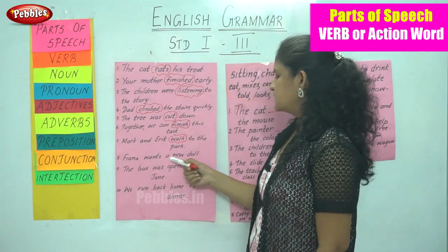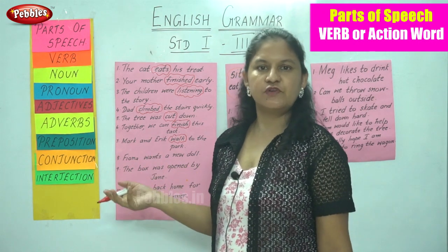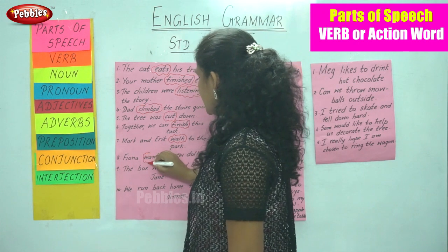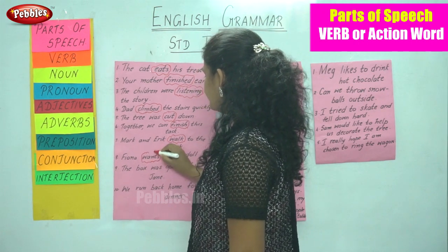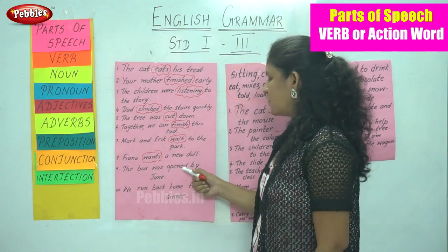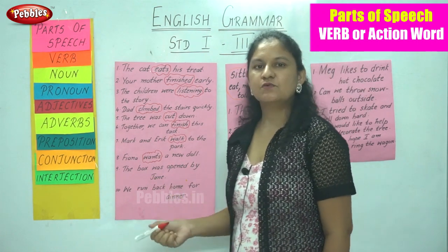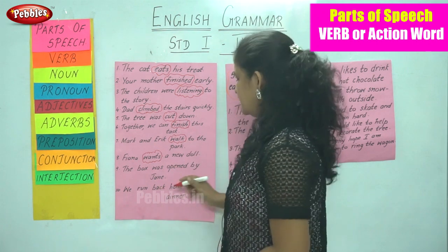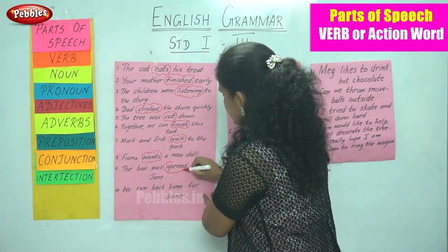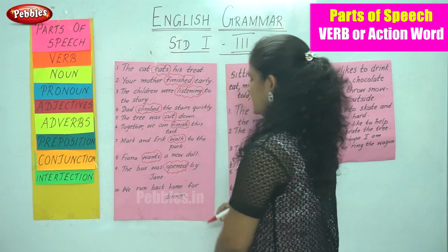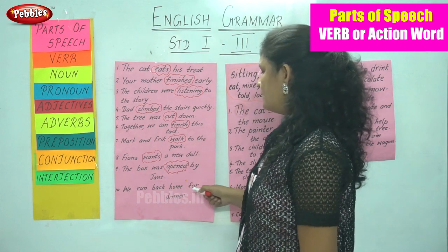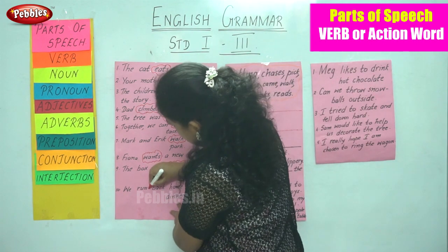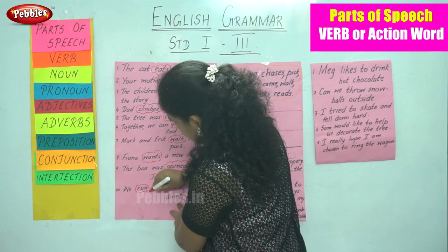'Fiona wants a new doll.' The action of Fiona is to want something, so want becomes the action word. 'The box was opened by Jane.' Jane was opening a box, so open is the action done by Jane. 'We run back home for dinner.' The action is to run, so run becomes the action word.